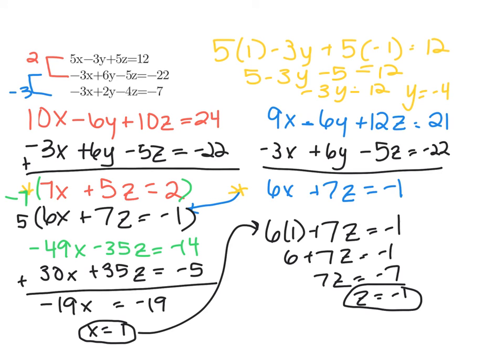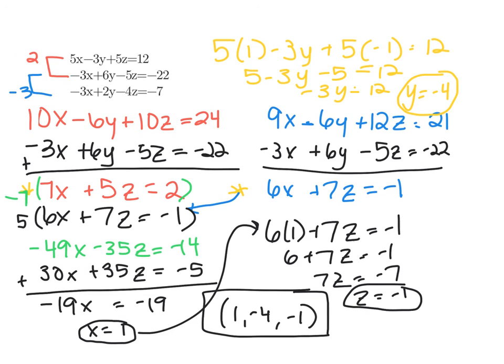Now I have all three variables. When we express our answer for a system of three by three equations, we write it as an ordered triplet: X, Y, Z — in alphabetical order. So the answer to this system is (1, negative 4, negative 1). And that is how we solve a system of three equations with three variables.